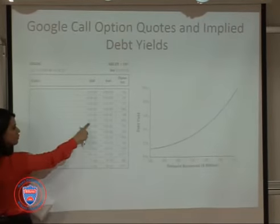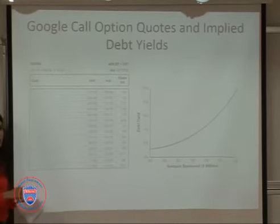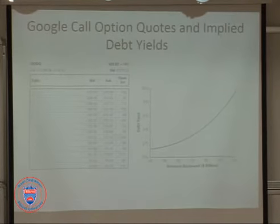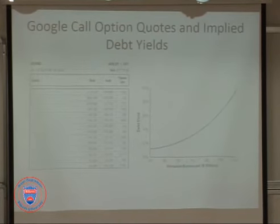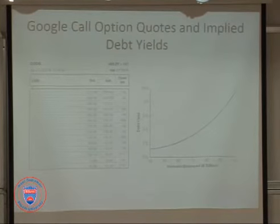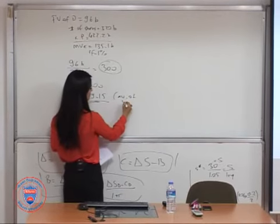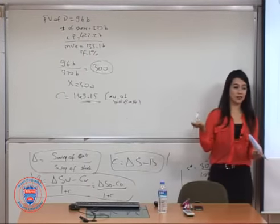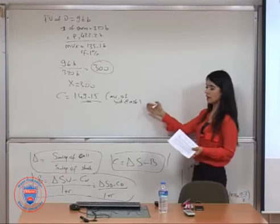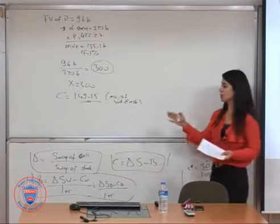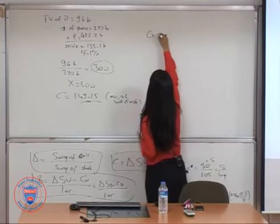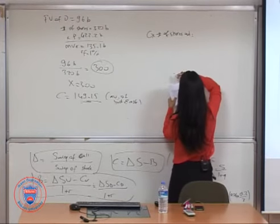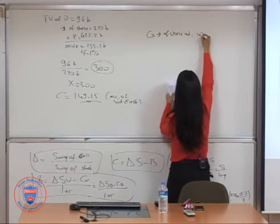From the option quotes, the bid price is $148.20 and the ask price is $150.10. Taking the average gives a call option value of approximately $149.50. Multiplying by 320 million shares outstanding gives a total equity value after recap of approximately $47.7 billion.